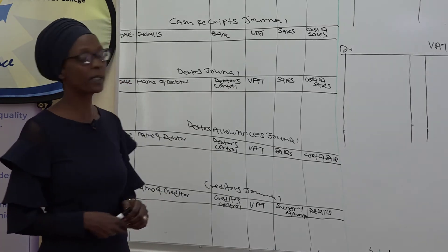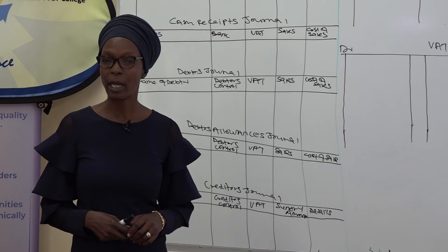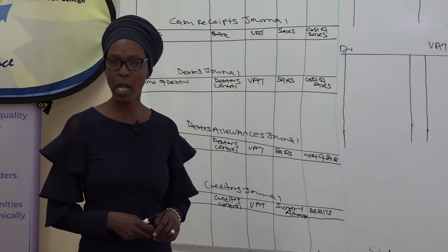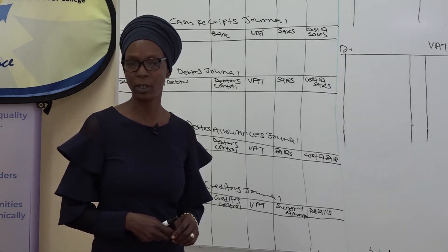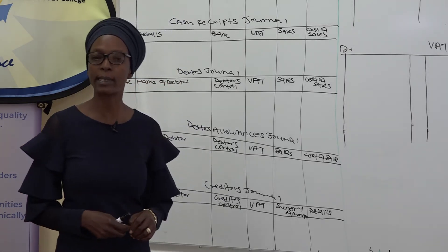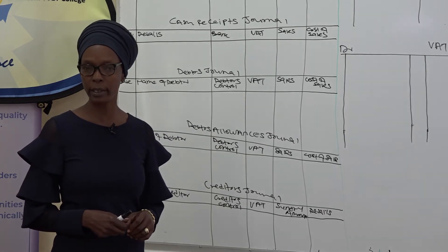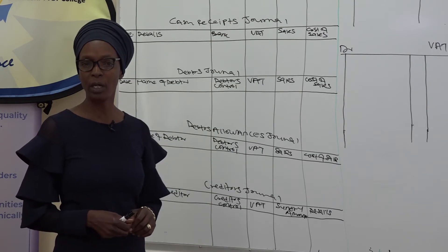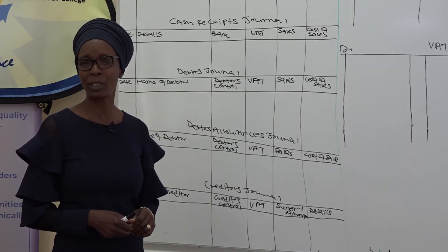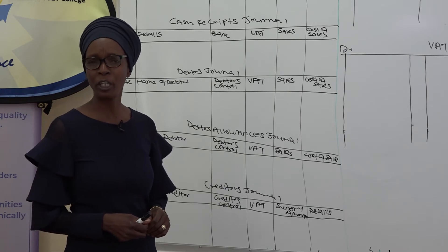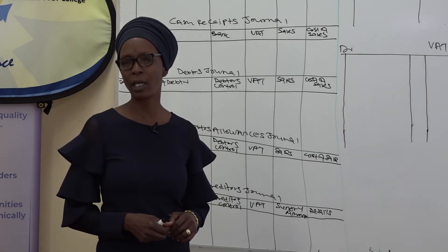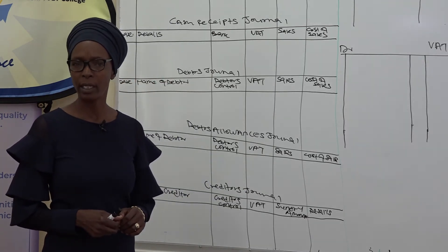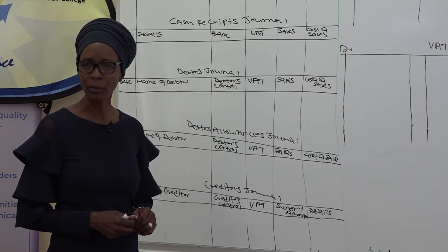The next subsidiary journal is our debtors journal. Remember, that journal is used to record all the credit sales to the customers — that means the business is selling goods on credit. And if we are selling goods to the customers, even on credit, we charge VAT on those items that fall under standard rate. That means the VAT from the debtors journal falls under output.